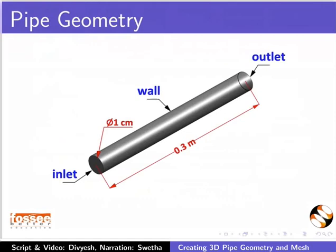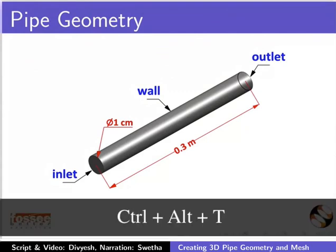The left and right faces are the inlet and outlet respectively. The cylindrical face of the geometry is a wall. The diameter of the pipe is 1 cm and its length is 30 cm.